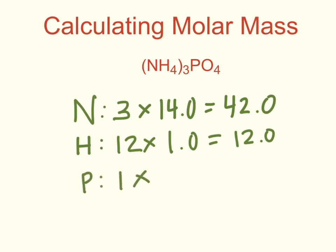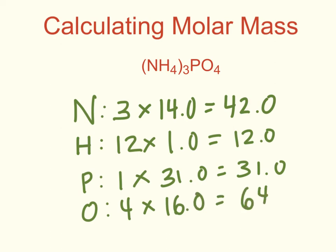I have one phosphorus atom, so I'm going to take one times the atomic mass of phosphorus, which is 31. One times 31 gives me 31. And I repeat for oxygen. I have four oxygens. Four times an atomic mass of 16.0 for oxygen gives me a mass of 64 grams. My final step is to add up all of my answers. 42 plus 12 plus 31 plus 64 gives me a total of 149.0 grams for my molar mass for ammonium phosphate.